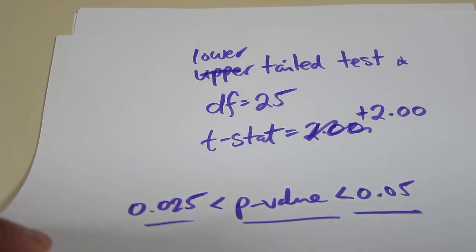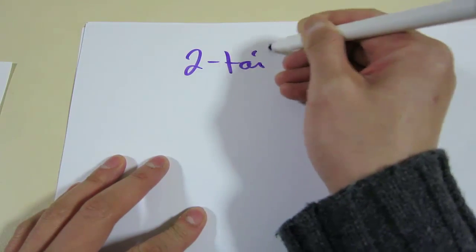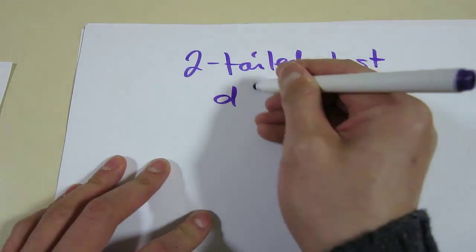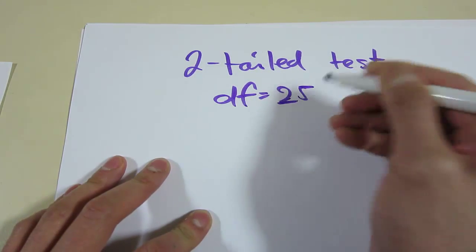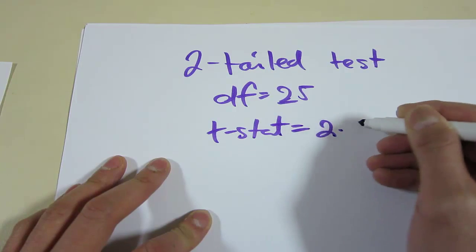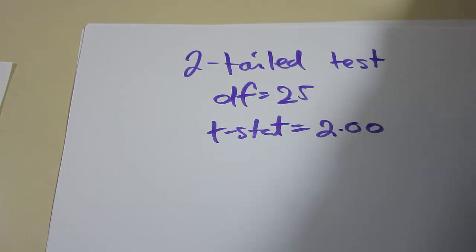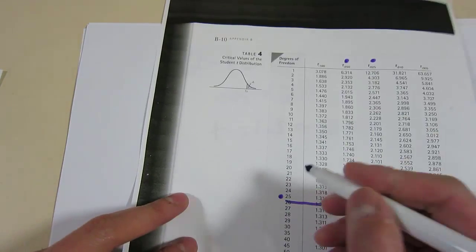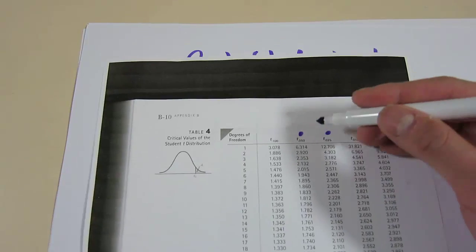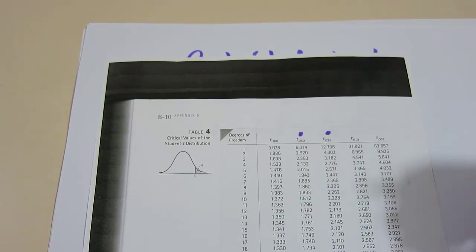Another situation. What happens if we have a two-tailed test? Same deal. Our degrees of freedom is 25 and our t-stat is equal to 2 exactly. Well, we do the exact same thing. We look at the same row, 25, and we know that 2 lies between these two alphas, 5% and 2.5%.